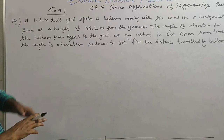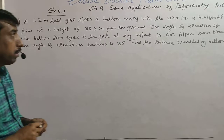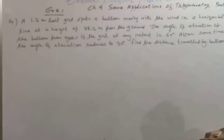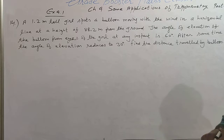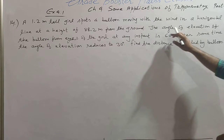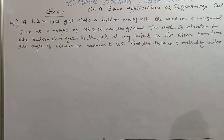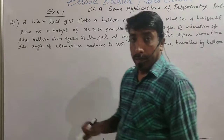Question 14. A 1.2 m tall girl spots a balloon moving with the wind in a horizontal line at a height of 88.2 m from the ground. The angle of elevation of the balloon from the eyes of the girl at any instant is 60 degrees. After some time, the angle of elevation reduces to 30 degrees. Find the distance travelled by the balloon.